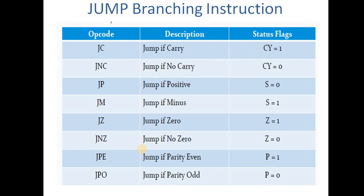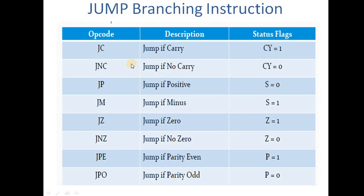Ab hum doosre jump dekh lete hain jo ki doosre flags ko check karte hue jump karte hain. Yahaan par hai opcode JC — JC matlab jump if carry. Toh hamaara agar carry flag jo hai woh 1 set ho rakha hai, toh humein jump karna hai. Aur agar zero ho rakha hai, toh humein jump nahi karna hai, matlab sequential flow hona hai. Ab yahaan hai doosra JNC — matlab jump if no carry. Toh agar carry flag 0 hai, matlab ki hamaara carry flag set nahi hai — set nahi hone ka matlab woh 0 hai — toh humein jump karna hai. And if it's 1, we don't jump.